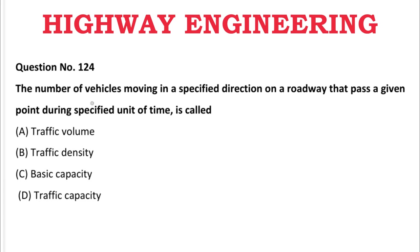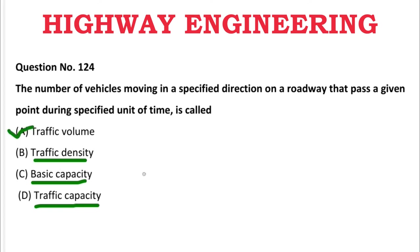Next question: The number of vehicles moving in a specified direction on the roadway that pass a given point during a specified unit of time is called — A: traffic volume, B: traffic density, C: basic capacity, D: traffic capacity. The correct answer is A, traffic volume.